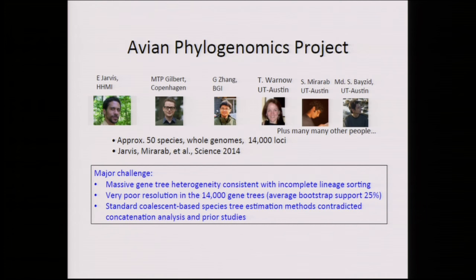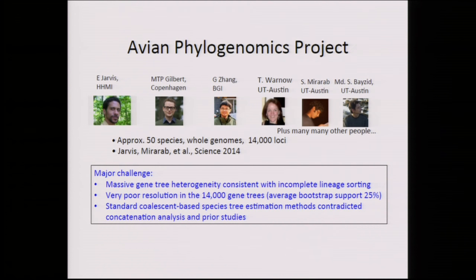Two projects I was involved in: first, the avian phylogenomics project. We had 14,000 different loci and a huge amount of gene tree heterogeneity — every single gene tree was different from the concatenation tree. We had also a rapid radiation producing this incomplete lineage sorting. We ended up with two different trees: the concatenation analysis gave one tree, the coalescent analysis gave another, and they were very different from each other, presenting the problem of how to analyze the data when getting two very different trees.